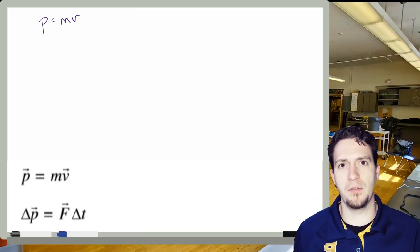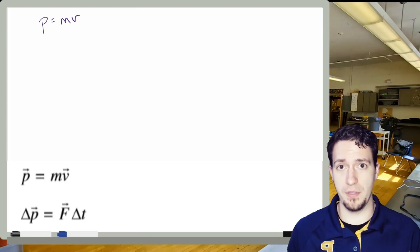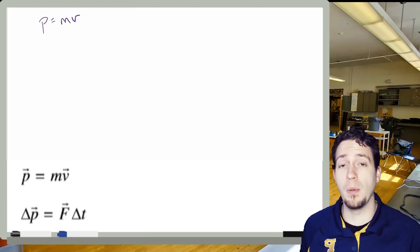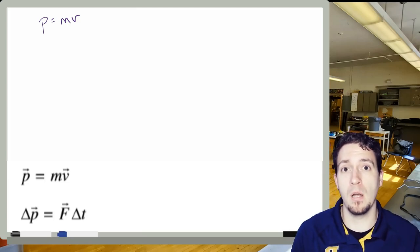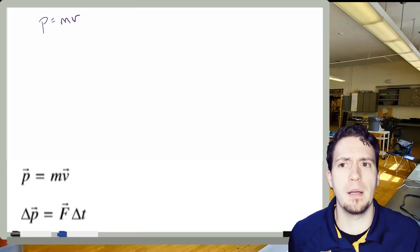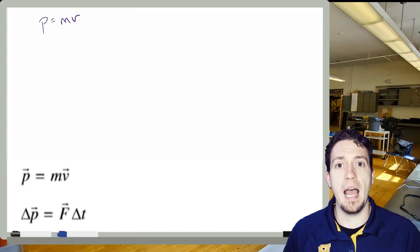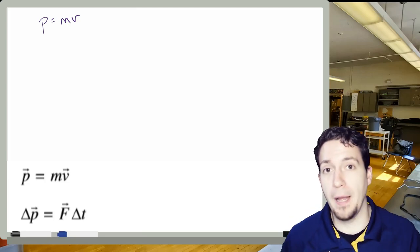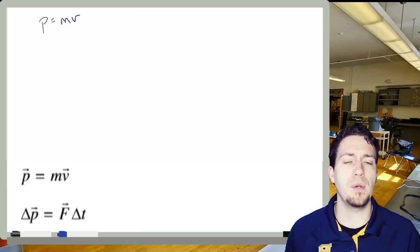Momentum, for us, fundamentally, is a measure of how difficult it is to stop an object. If we think about what it means to be difficult to stop, it doesn't necessarily just have to be a very massive object. It doesn't necessarily have to be something always going fast. A train going very fast is very hard to stop, especially if you're Tobey Maguire in Spider-Man 2, right? It's extremely difficult. But it could be a mix of those things.